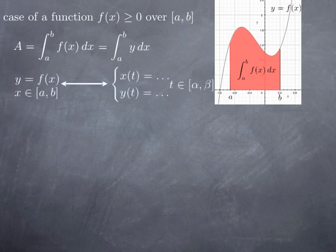Now let's imagine that this curve — which in that case is a graph of a function — is represented as a parametric curve with parameter t. We are looking at the curve y = f(x), the graph of the function where x ranges from a to b, and when we re-parameterize the curve as x(t), y(t), with t in some other interval from alpha to beta. We ask that x(alpha) = a and x(beta) = b.